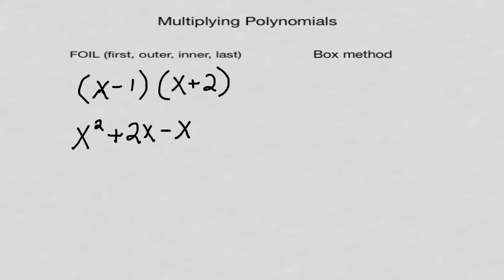Now I'm going to do the Last — that's the negative 1 and the positive 2. That gives me minus 2. So I did four things: multiplied the First, Outer, Inner, and Last. Now I need to clean it up. The x squared stays, the minus 2 stays, and in the middle 2x minus x just leaves plus x. So the answer is x squared plus x minus 2.